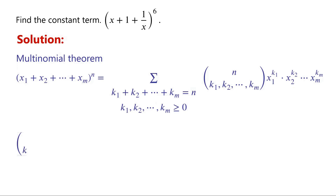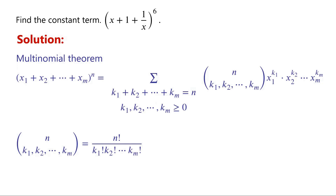The multinomial coefficient n choose k1, k2 through km is equal to n factorial over k1 factorial times k2 factorial times so on times km factorial.